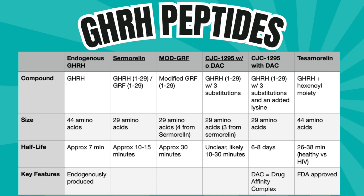Coming full circle, tesamorelin has the same 44 amino acids as endogenously produced growth hormone-releasing hormone, with an added hexanoyl moiety. The half-life differs based on patient population: tesamorelin, branded as Egrifta, is FDA-approved for management of HIV-associated lipodystrophy, and was evaluated in both those with HIV and otherwise healthy individuals. In otherwise healthy people it exhibits a half-life of about 26 minutes, while those with HIV exhibit a half-life of about 38 minutes.